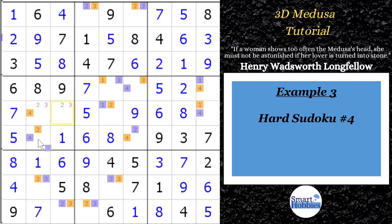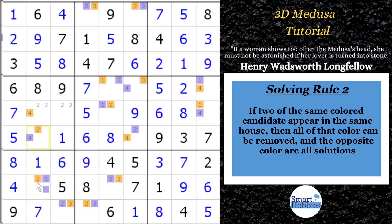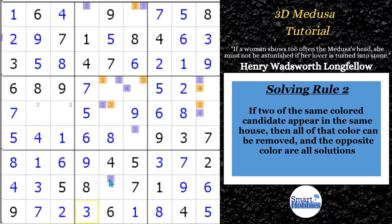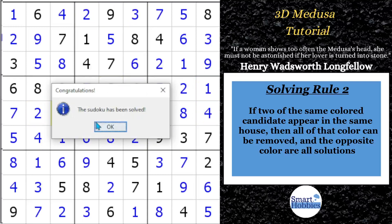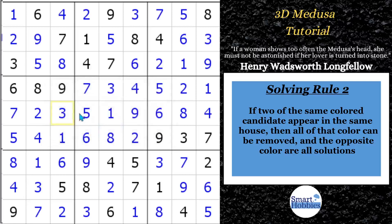We now have an orange two here and an orange two there. This brings us to the second solving rule: if two of the same color appear in the same house, all of that color can be removed and the opposite color are all solutions. There's a contradiction in the orange path — you'd need a two in two places in the same house. So we solve all the purple cells: three, four, two, three, two — the puzzle is quickly solved. You can always apply 3D Medusa to remote pairs as well.